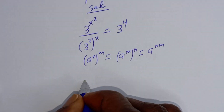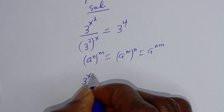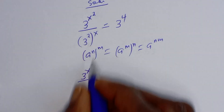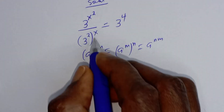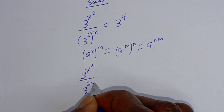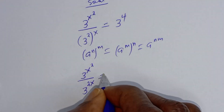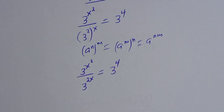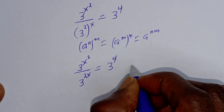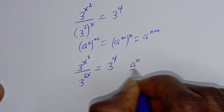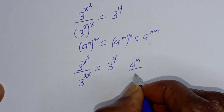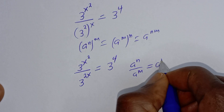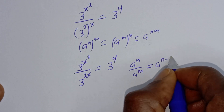This can be written as 3 raised to power x squared divided by 3 raised to power 2x. Also note that if you have a raised to power n over a raised to power m, this is equal to a raised to power n minus m.